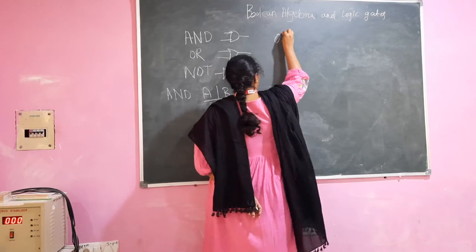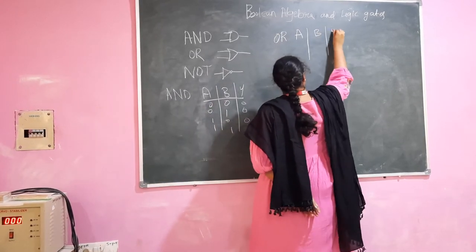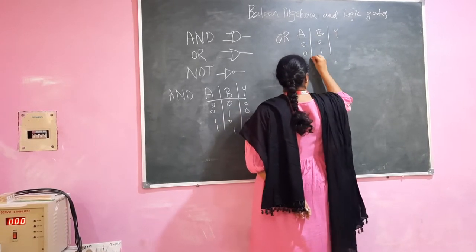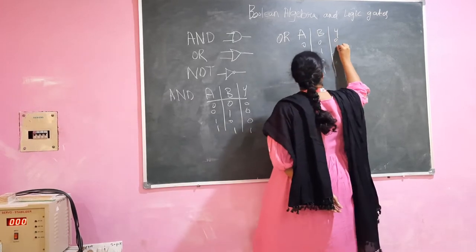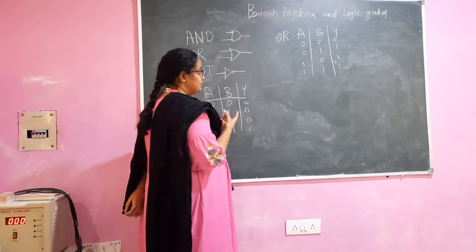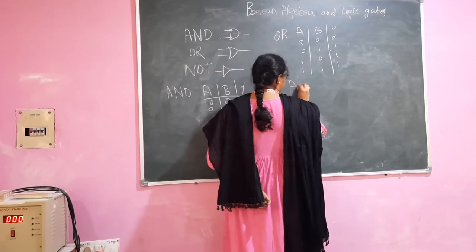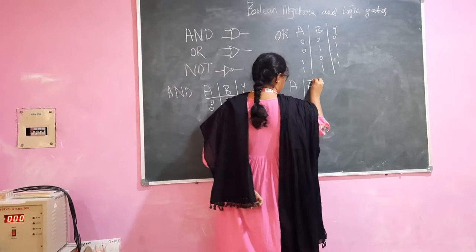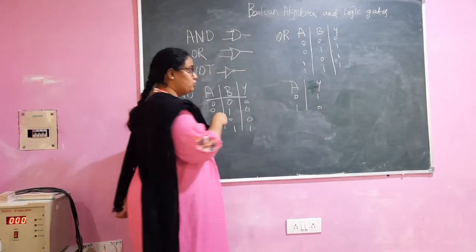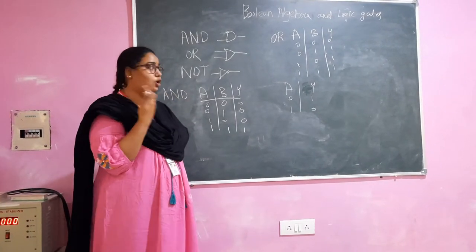Similarly, for OR gate, we get the truth table. This would be the truth table of an OR gate — it represents the addition operation. For a NOT gate, whatever input is given, the output would be the opposite.